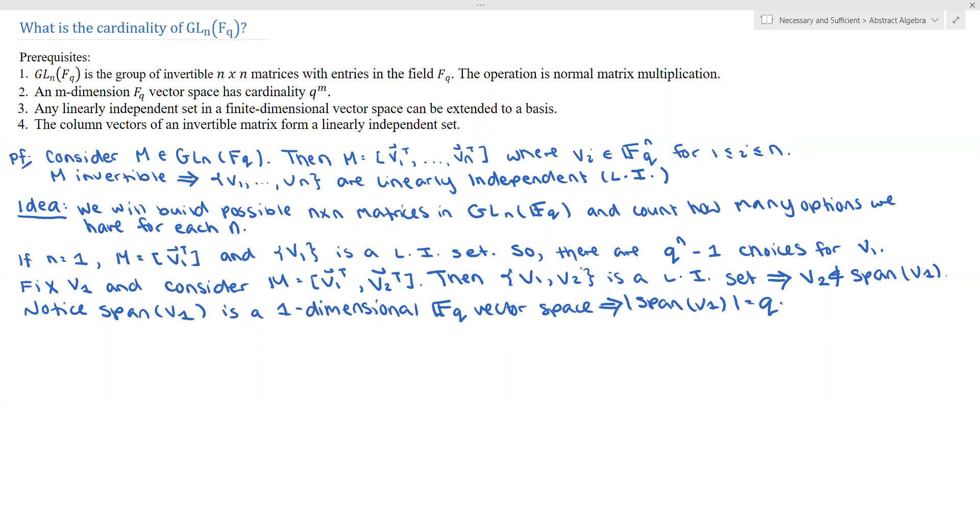So we want to pick V2 such that V1, V2 is linearly independent. So there are Q to the n. And similar to how we did when n equals 1, we're going to subtract off what we cannot have. So we noticed that there were Q vectors in the span of V1. So Q to the n minus Q choices for V2.